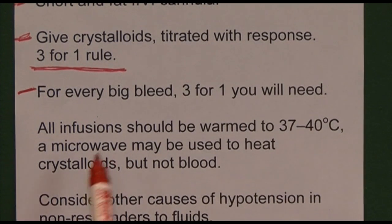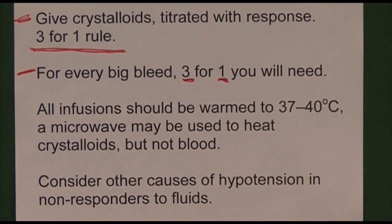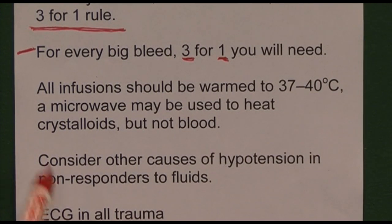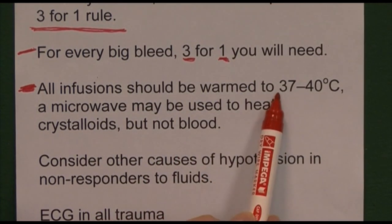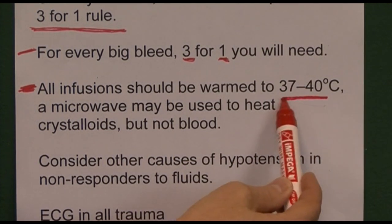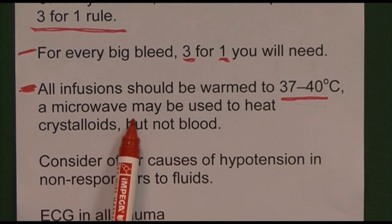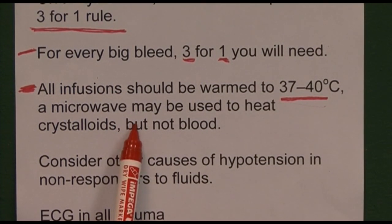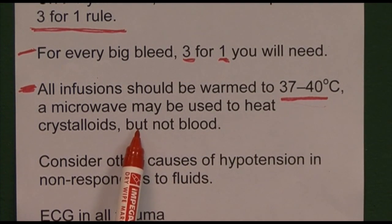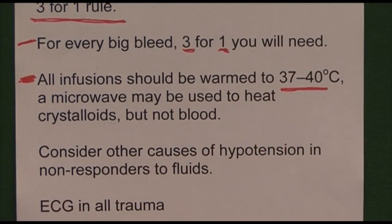The rhyme: for every big bleed, three for one you will need — three litres of crystalloid for every one litre of blood lost. Because we're running large volumes of cold fluid into the patient, body temperature can drop, so intravenous infusions should be warmed to around body temperature or just above. Ideally use a water bath at 38–39 degrees Celsius. In an emergency, bags of Hartmann's or saline can be warmed in warm water in a sink. Never put blood in the microwave — the red cells will explode.